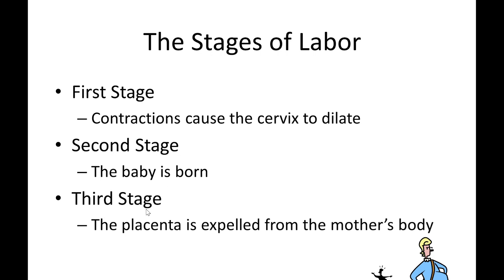There are three stages of labor. In the first stage, contractions cause the cervix to dilate — the uterus tightens and relaxes to dilate the cervix. In the second stage, the baby is born — delivery of the baby takes place. In the third stage, the placenta is expelled from the mother's body.